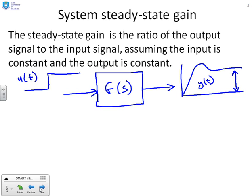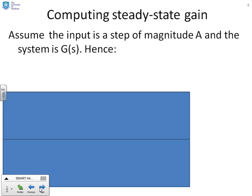We could represent U of T with a transfer function A over S, making sure it has magnitude A. The output is given by Y of S equals G of S times A over S. So the gain is the steady state of Y of T divided by the steady state of U of T.